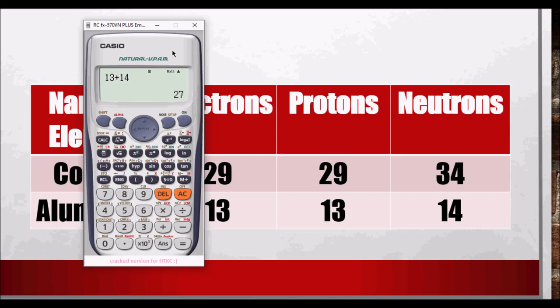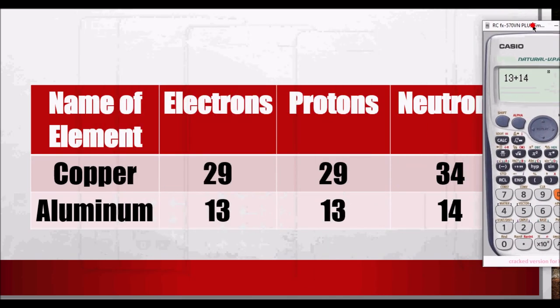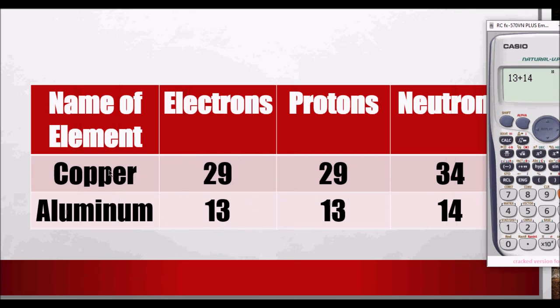Aluminum: 13 plus 14 equals 27, so the atomic mass is 27. The atomic number of copper is 29, and the atomic number of aluminum is 13. The atomic number of copper is 29 because the number of electrons is 29 and the number of protons is 29. The atomic mass is 63 because it's the sum of protons and neutrons.